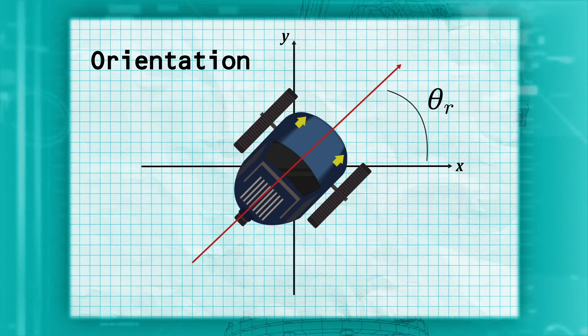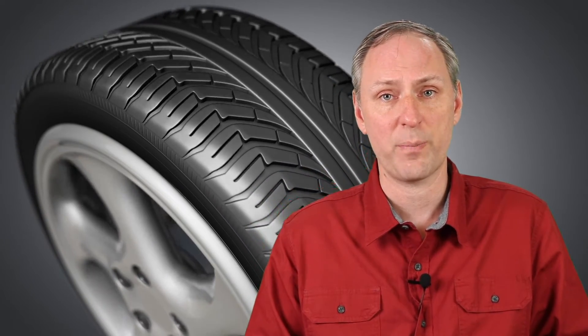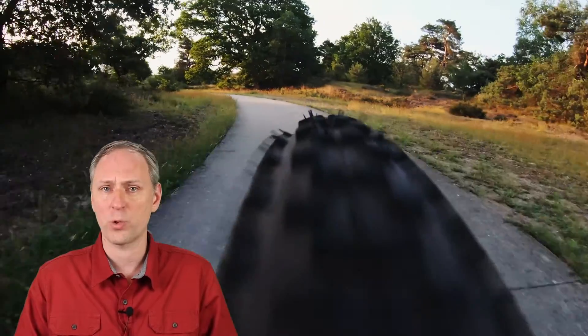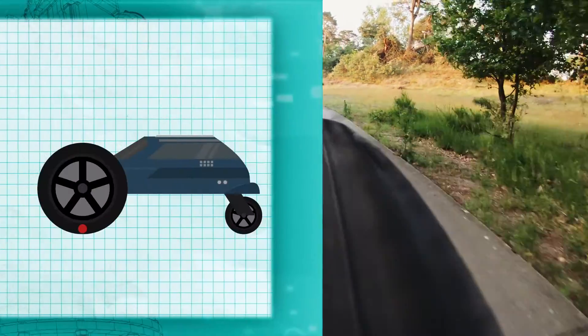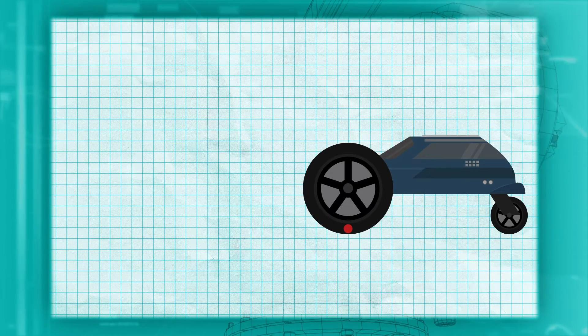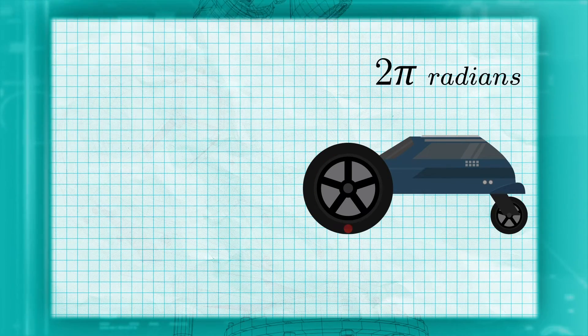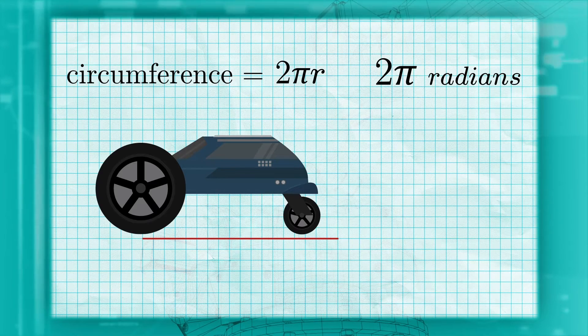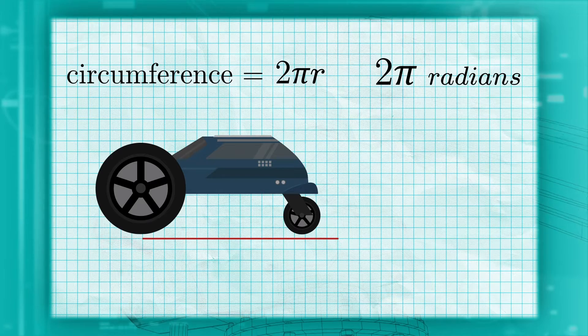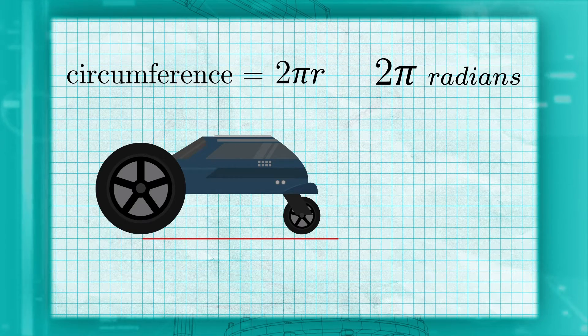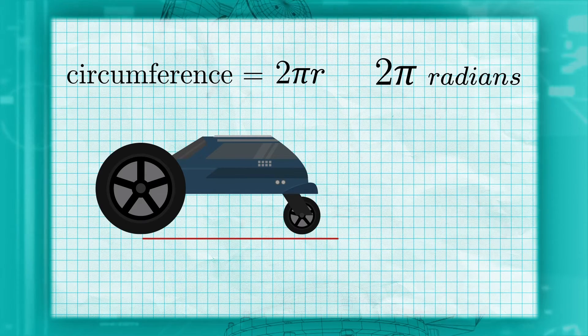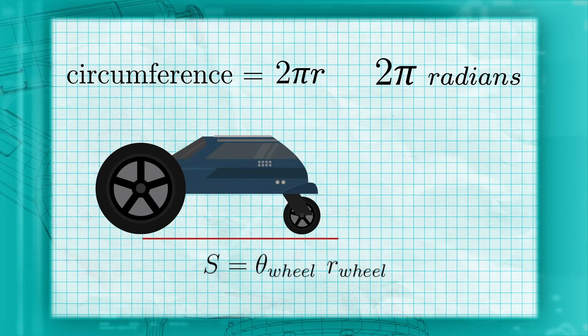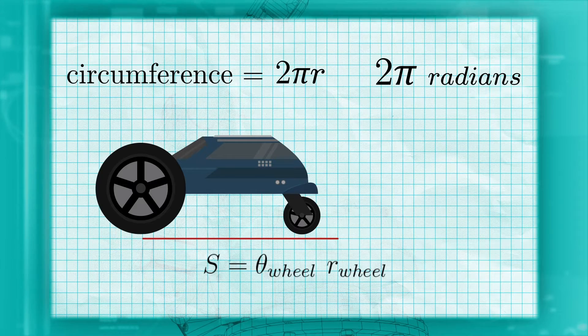We'll use the subscript r for robot. The second thing we need to discuss is the relationship between how fast something such as a wheel turns with how fast it moves forward. We need this to relate our motor speeds with our robot speeds. If we spin a wheel around one time, we know the wheel has rotated 2π radians. We also know that we have moved along the ground a distance equal to the circumference of the wheel. Circumference is equal to 2π times the radius. Therefore, rotating 2π radians will result in traveling 2πr meters. In other words, the distance s traveled by the wheel is equal to the angle θ by which the wheel is rotated times the radius r of the wheel.